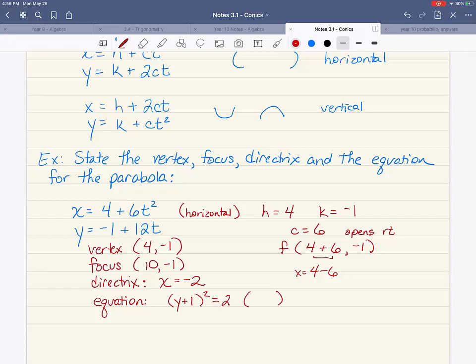So this is going to be y minus k. So that's plus one squared equals 4c. C is 6, so 4c will be 24, x minus 4. And I'm done.